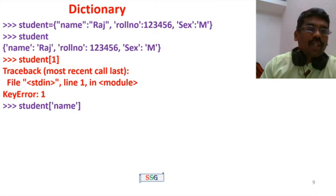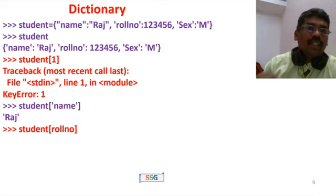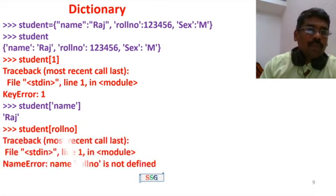To access a value, use the key. For example: student['name'] returns the name. student['roll number'] returns the roll number. You access dictionary values using the key, not an index position.